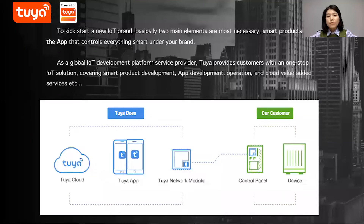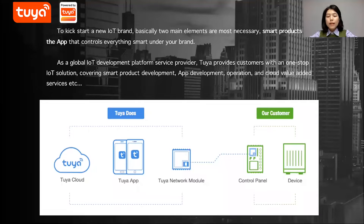To kickstart a new IoT brand, basically two main elements are most necessary: smart products, and the app that controls everything smart under your own brand.